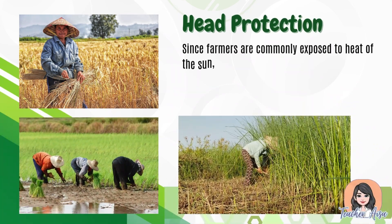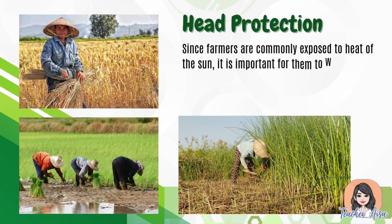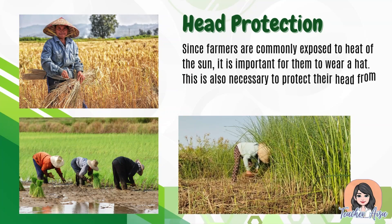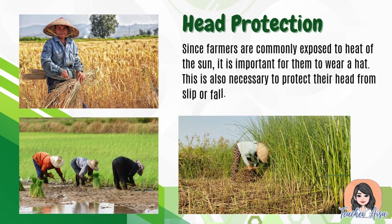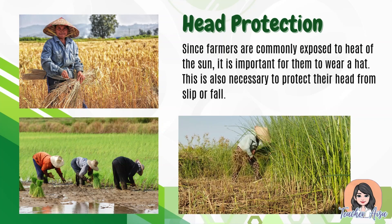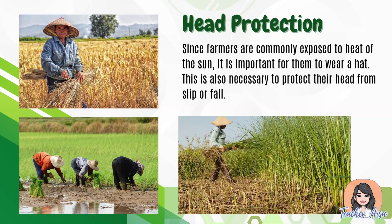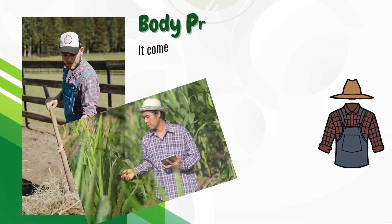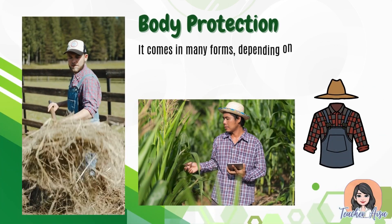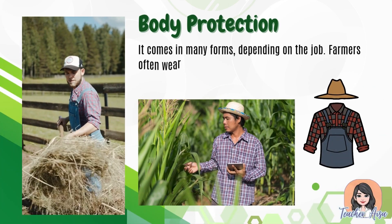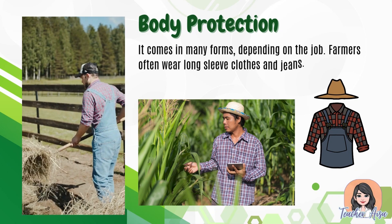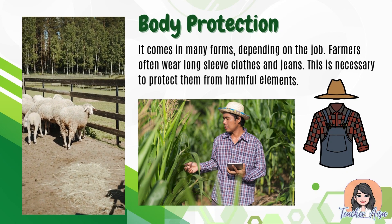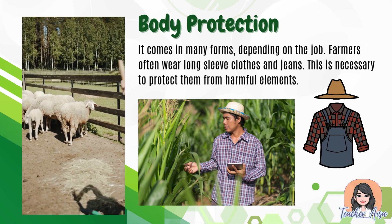Head protection — since farmers are commonly exposed to the heat of the sun, it is important for them to wear a hat. Head protection is also necessary to protect their head from slip or fall. Body protection comes in many forms depending on the job; farmers often wear long-sleeve clothes and jeans to protect themselves from harmful elements.